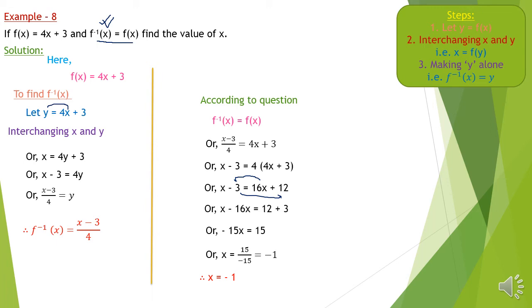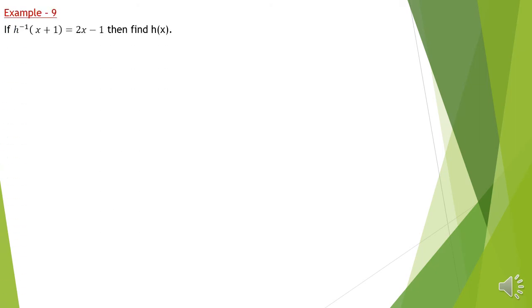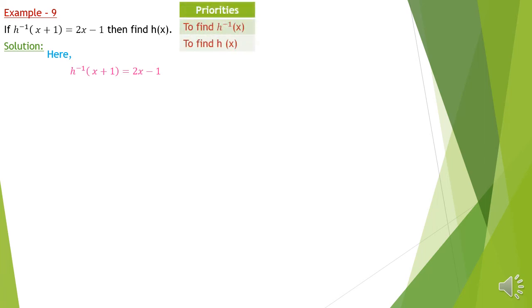Now the ninth question. H⁻¹(x+1) is given — we have done something similar with function g where it was not expressed as g(x) and we made it g(x). Here the inverse is not expressed properly as h⁻¹(x); it is given as h⁻¹(x+1). So we have to first find h⁻¹(x), then find h(x) by finding the inverse of h⁻¹(x).